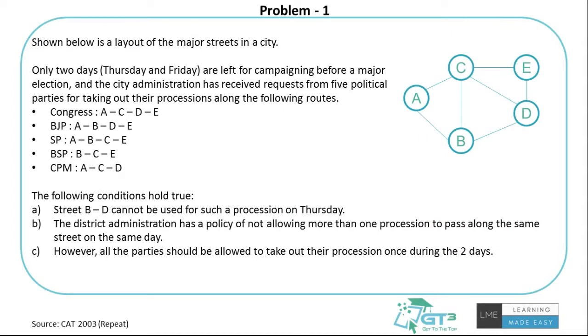This is a CAT question from 2003. Shown below is a layout of major streets in the city. Only two days, Thursday and Friday, are left for campaigning before a major election, and the city administration has received requests from five political parties for taking out their processions along the following routes.